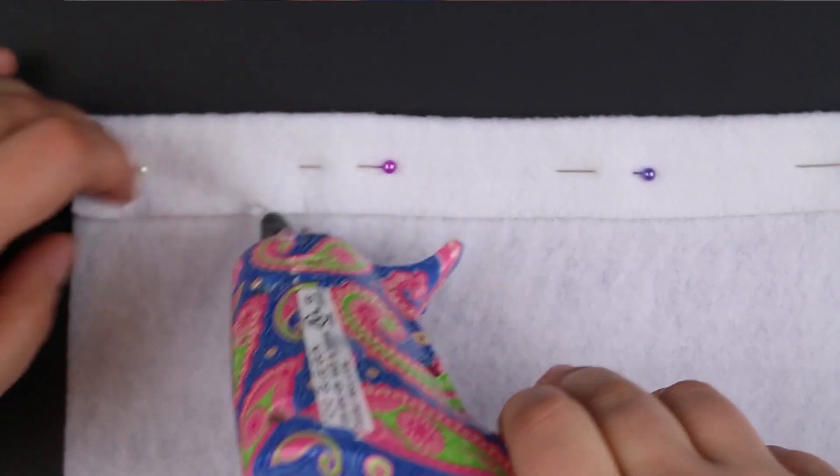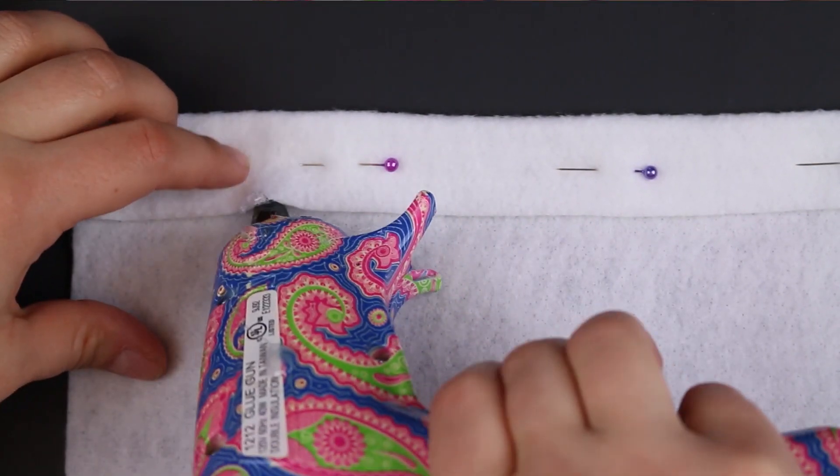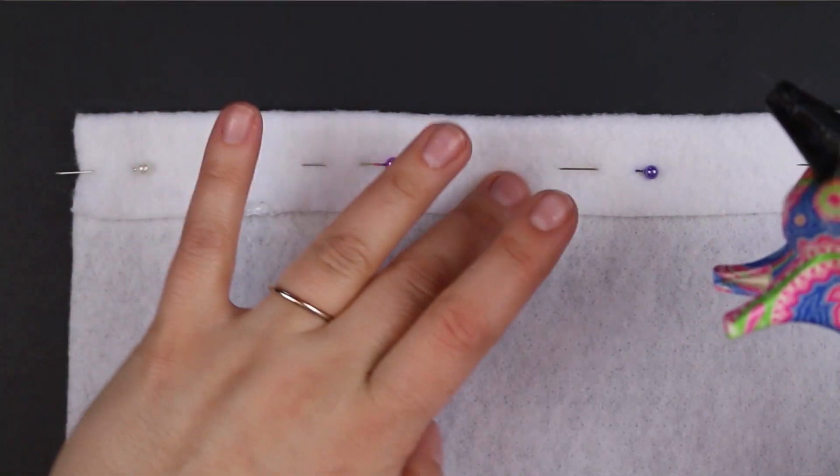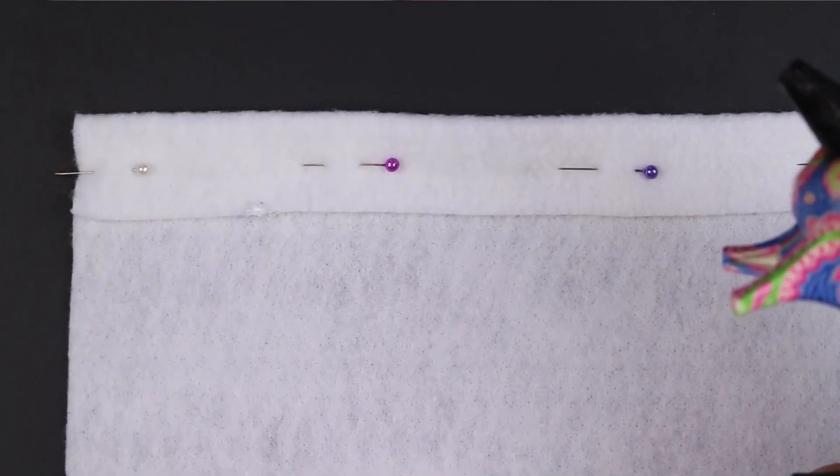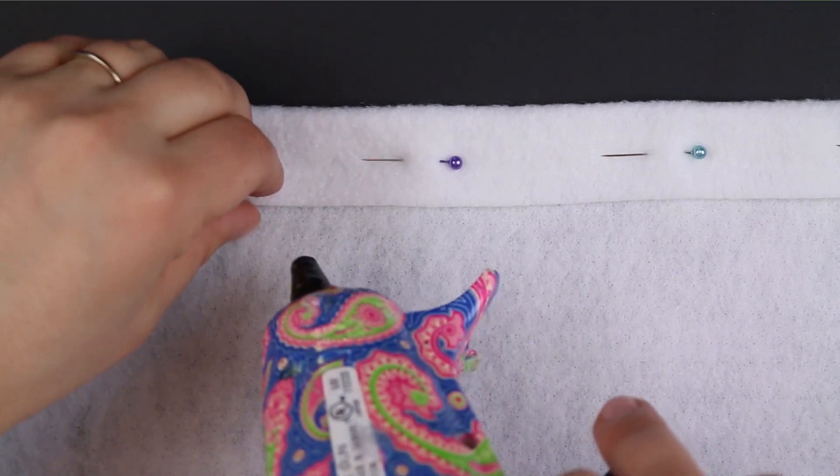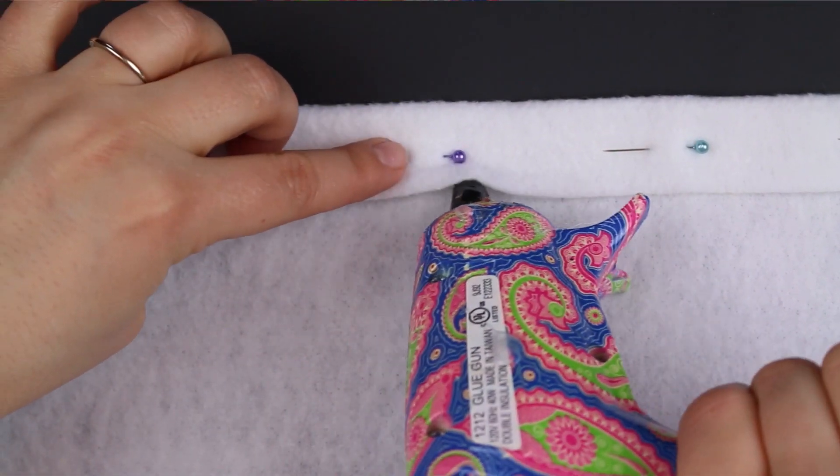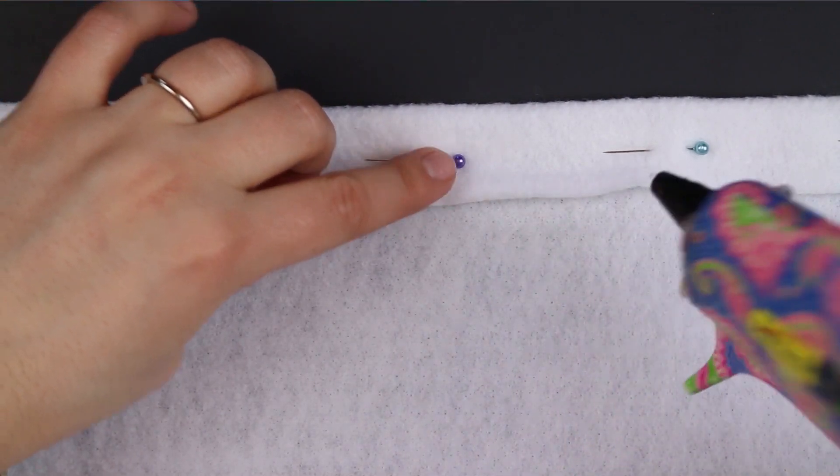Run a bead of hot glue along the very edge of that overhang. This will create a pocket at the top of the banner so that you can slip a dowel in and that can be used to hang the banner when it's all finished. Glue all the way across the piece of felt and then let the glue dry.